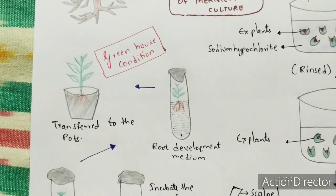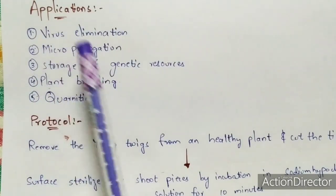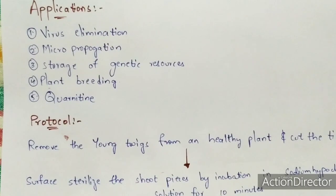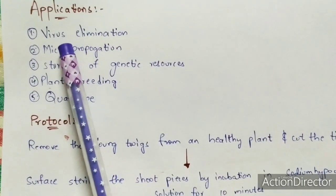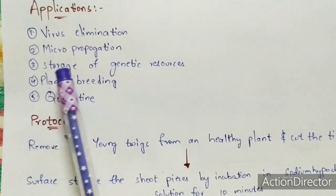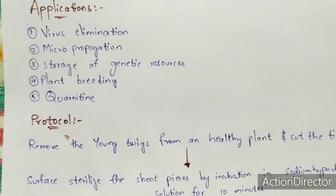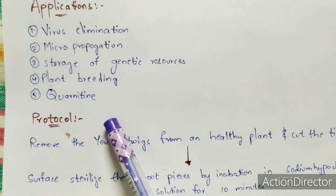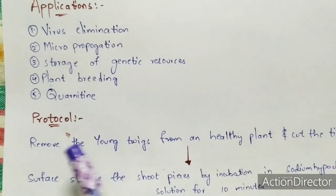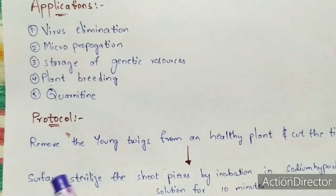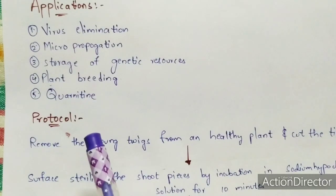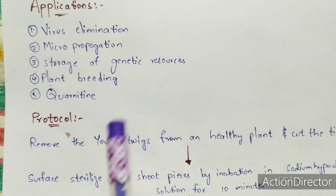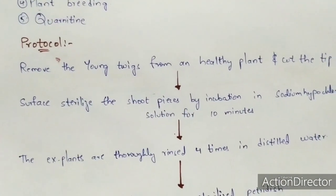The applications of meristem culture are: first, virus elimination — the basic and major application; second, micropropagation; third, storage of genetic resources; fourth, plant breeding; and fifth, quarantine. The plantlets derived from shoot tip or meristem cultures are easily accepted by quarantine authorities because during international exchange, additional checking is not required.